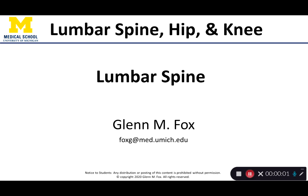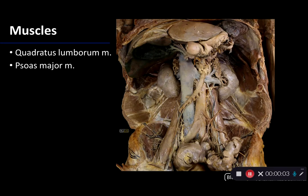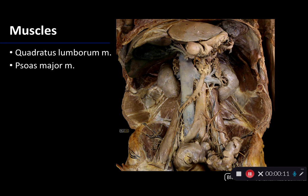Let's talk about the lumbar spine. The lumbar spine consists of five lumbar vertebrae, L1 through L5, connecting the thoracic vertebrae to the sacrum. There are many different muscles that affect the movement of the vertebral column, but specifically we'd like to look at two of these which are visible from the anterior lower abdominal retroperitoneum and pelvis.